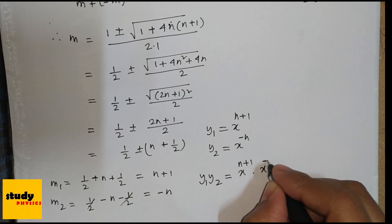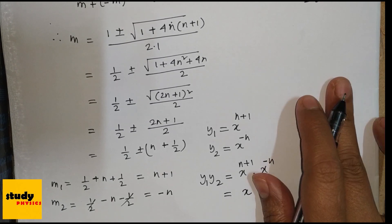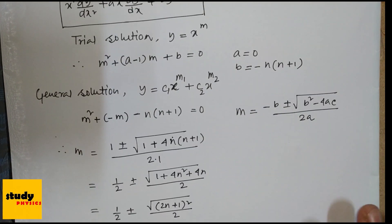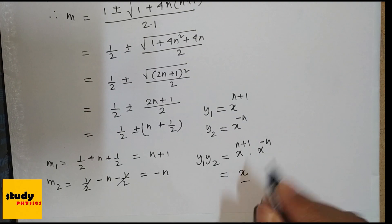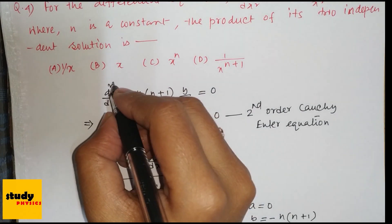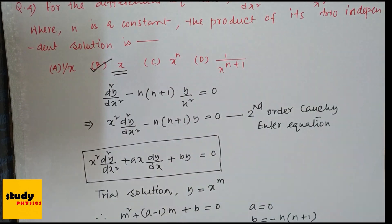The product of the two independent solutions is y₁ · y₂ = x^(n+1) · x^(−n) = x. So the answer is (b). Thank you — please like, share, and subscribe.